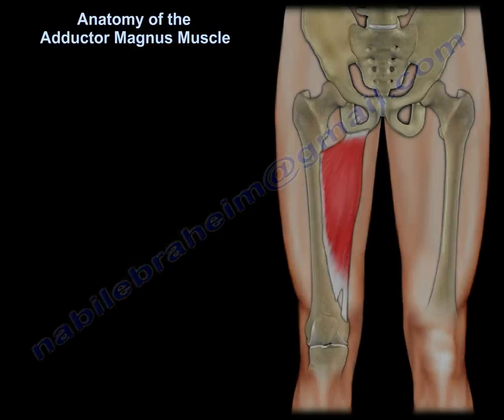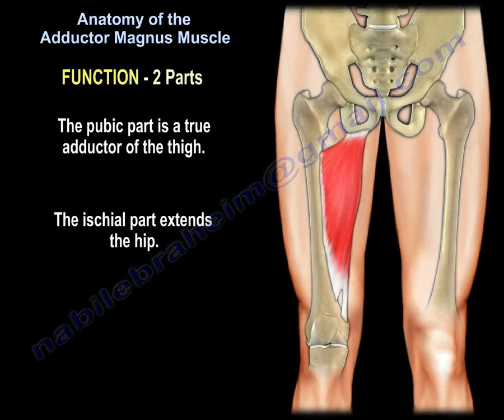Function has two parts. The pubic part is a true adductor of the thigh. The ischial part extends the hip.